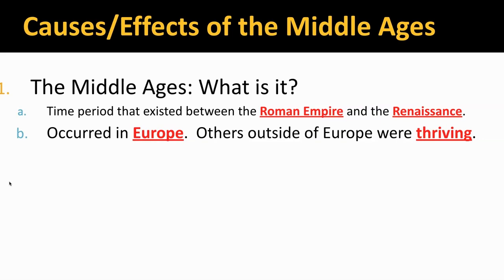Much like the question I posed earlier — what would happen if our American government disappeared? — the government disappeared when the Romans were gone, and that's going to lead to some major changes. Some of those changes are good; many of them in the short term are awful. This occurred in Europe, while others outside of Europe were thriving. I've got a slide that's going to talk about some of the other groups that continued on even as the Europeans were going through the Middle Ages.